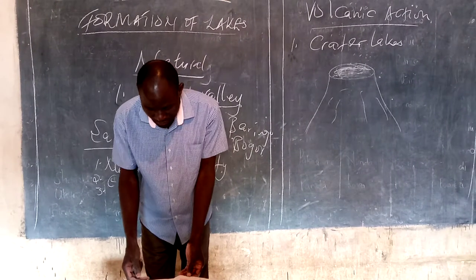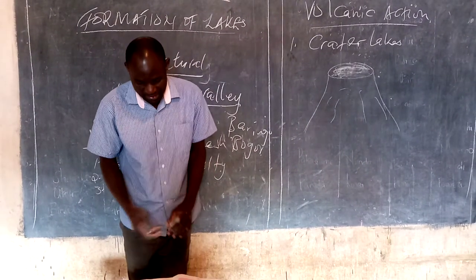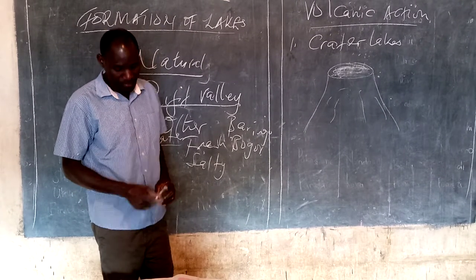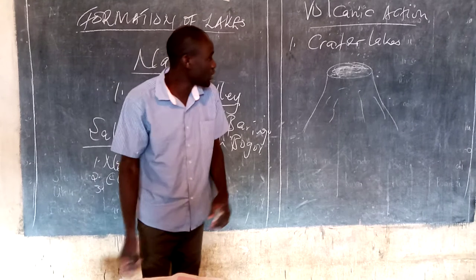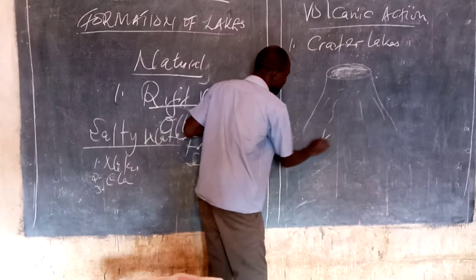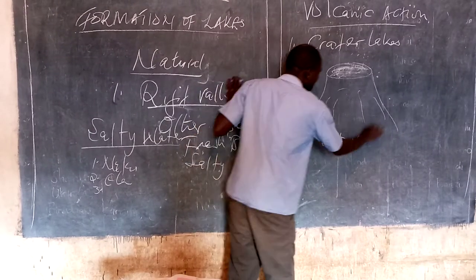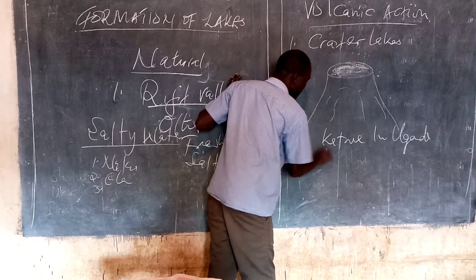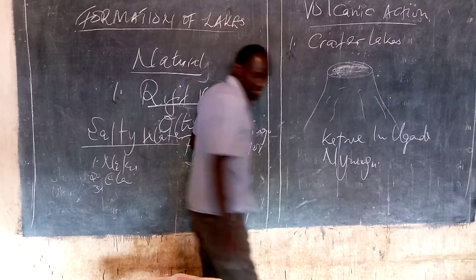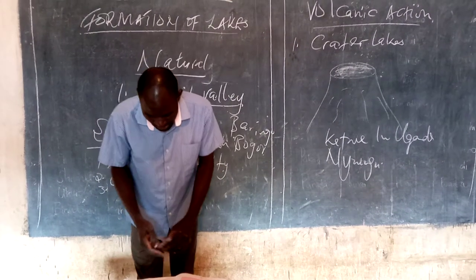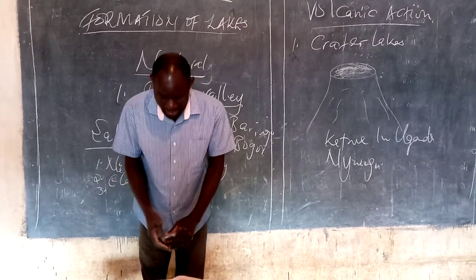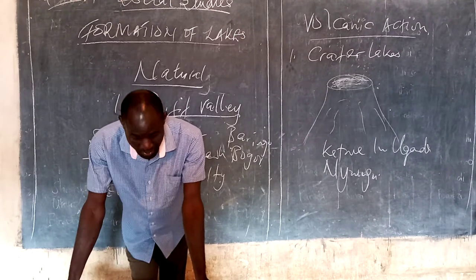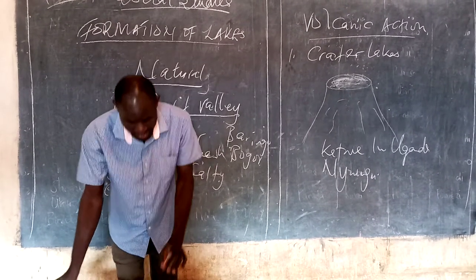We are going to look at examples of crater lakes found in Uganda and Kenya. In Uganda, examples include Lake Katwe and Lake Nyungu. In Ethiopia we have Lake Tazaniya.